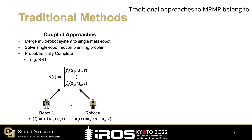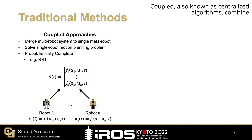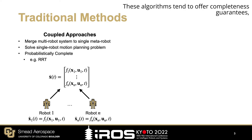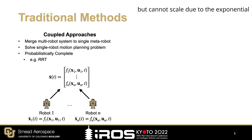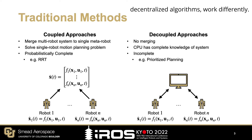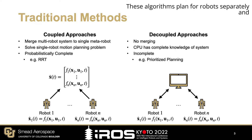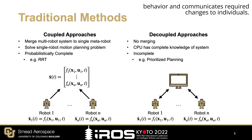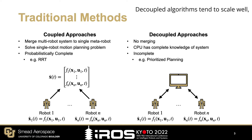Traditional approaches to MRMP belong to two categories: coupled or decoupled. Coupled, also known as centralized algorithms, combine the multi-robot team into a single meta-robot by stacking their states and dynamic constraints on top of each other. These algorithms tend to offer completeness guarantees, but cannot scale due to the exponential growth of the search space. Decoupled, also known as decentralized algorithms, plan for individual robots separately and share their solutions with some high-level manager. The manager then reasons about the system behavior and communicates required changes to individuals. Decoupled algorithms tend to scale well, but fail to offer completeness guarantees.